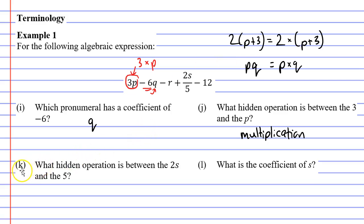All right, moving on to question K now. It says, what hidden operation is between the 2s and the 5? So we're looking at our fraction here. What operation is happening between the 2s and the 5? And fractions are the same as division. 2s over 5 is the same as saying 2s divided by 5. So for question K, we'll write division.